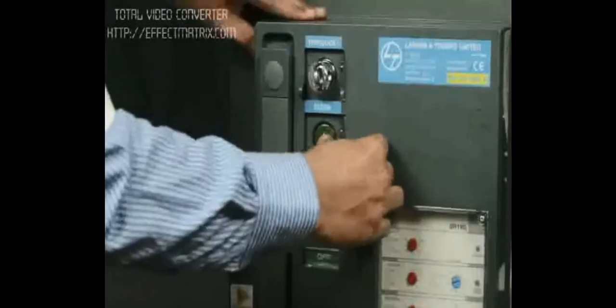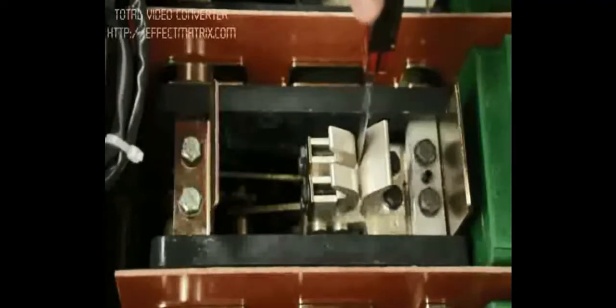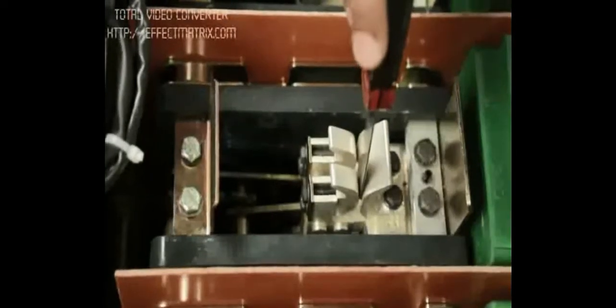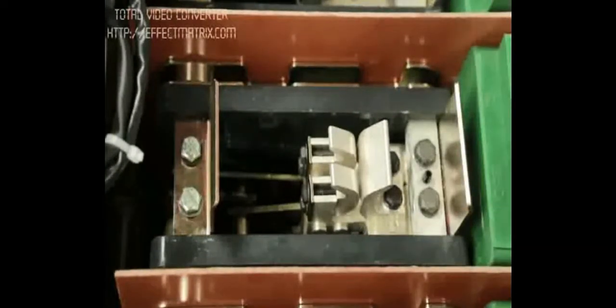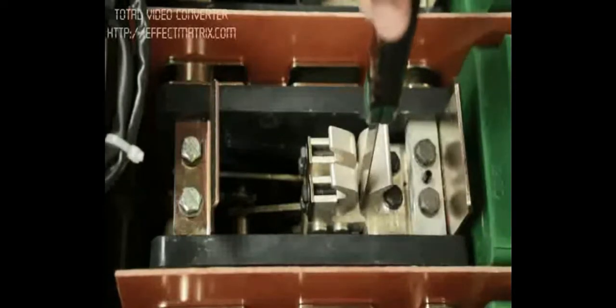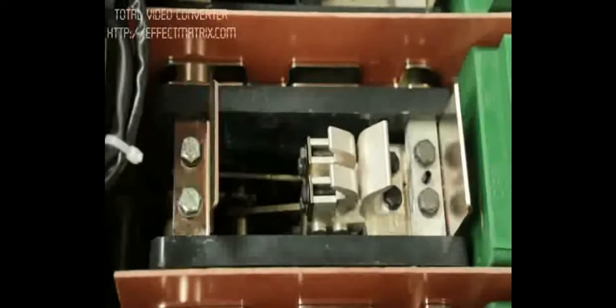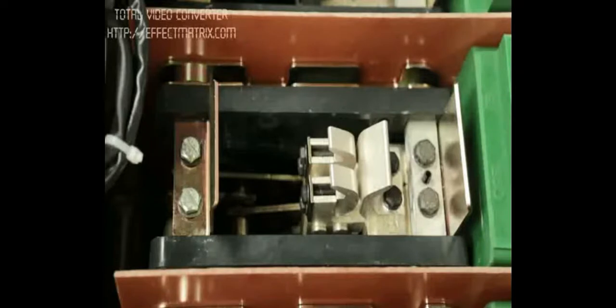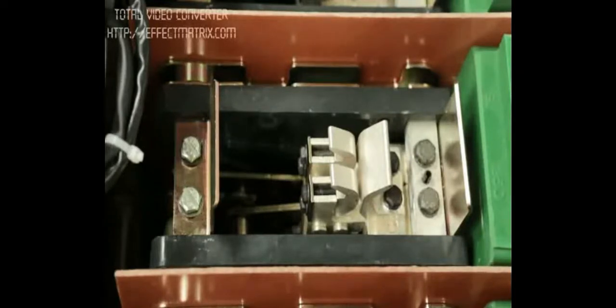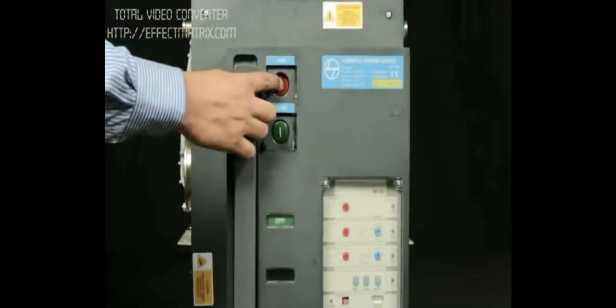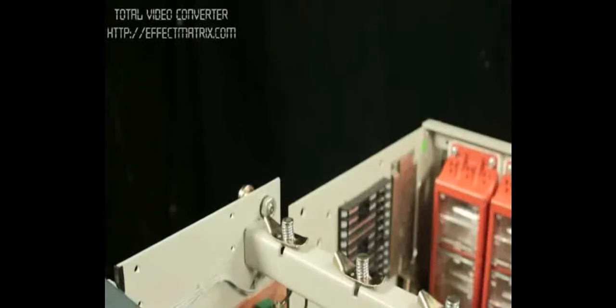Close it with the help of closing push button. Check gap between fixed and moving contact with the help of gauge. The gap should be 0.9 plus or minus 0.1 mm. If the gap is not correct, loosen the fixed arcing contact, adjust gap and tighten again with the help of ratchet. Now trip the ACB. Place arc chute on the top of the pole.